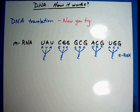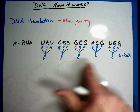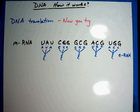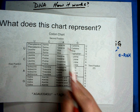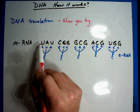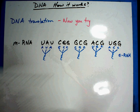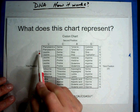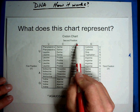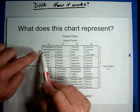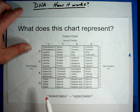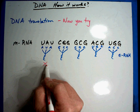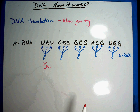Now let's figure out what the amino acids were and see if you got them right. We looked them up on the chart. Remember, when you have the chart, you use first position, second position, and third position. The first one is U, A, U. U and A come together and U — it should be tyrosine. TYR. It doesn't matter what the abbreviation is, I just didn't want to write the whole word.